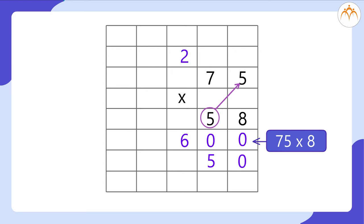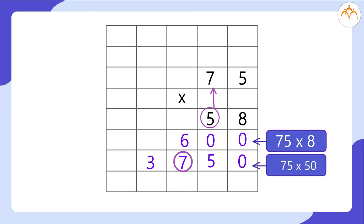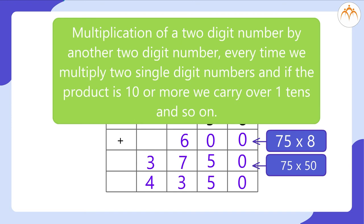Let us do it. When 5 is multiplied by 5, we get 25. So we write 5 at the tens place and take 2 tens as the carryover. Now we multiply 7 by 5 to get 35, in which we add the carryover 2 to get 37. So we write 7 at the hundreds place and 3 at the thousands place. Then we add these two answers to get the final answer as 4,350. It is very important to note that every time we multiply two single-digit numbers and the product is 10 or more, we carry over 1 ten and so on.